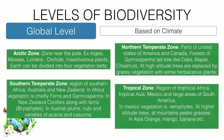Arctic zones are the zones near the poles. Examples of plants and animals here include algae, moles, mosses, lichens, and orchids among the vegetation.